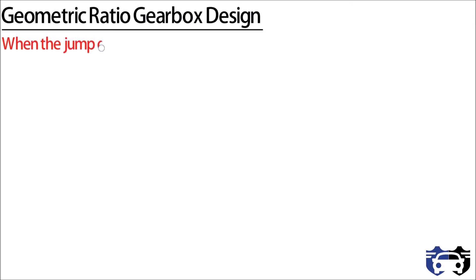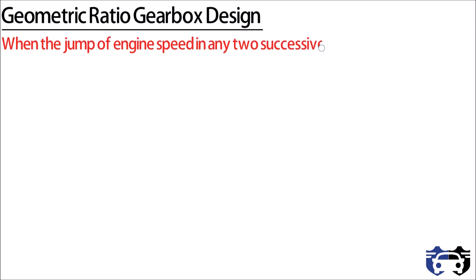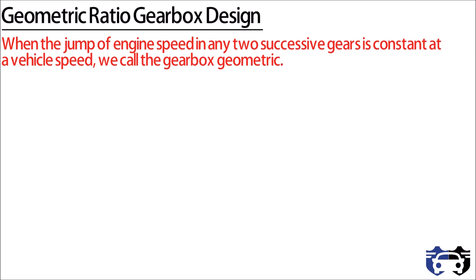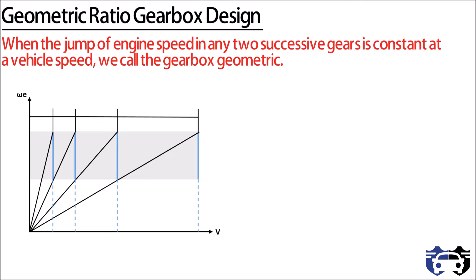First, we are looking at geometric ratio gearbox designing. When the jump of engine speed in two successive gears is constant at a vehicle speed, we call the gearbox geometric. The curve shown here is for a geometric gearbox — it plots engine speed omega e against vehicle velocity v at different gears n1, n2, n3, and n4, between the constant range omega 1 to omega 2 and corresponding velocities v1, v2, v3, and v4. You can see from the curve that the gears are changing with a constant jump from omega 1 to omega 2.